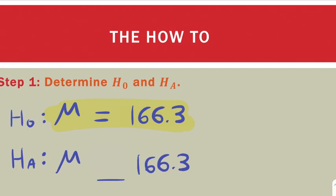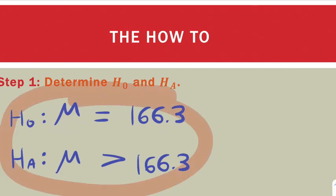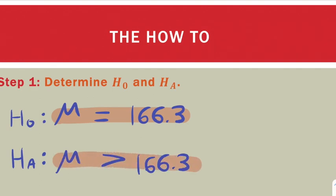Because it's being suggested that it's greater than, we're going to put a greater than symbol. And now we have our hypotheses. The null is that the average weight of a man is equal to 166.3. And the alternative is that the average weight of a man is greater than 166.3.